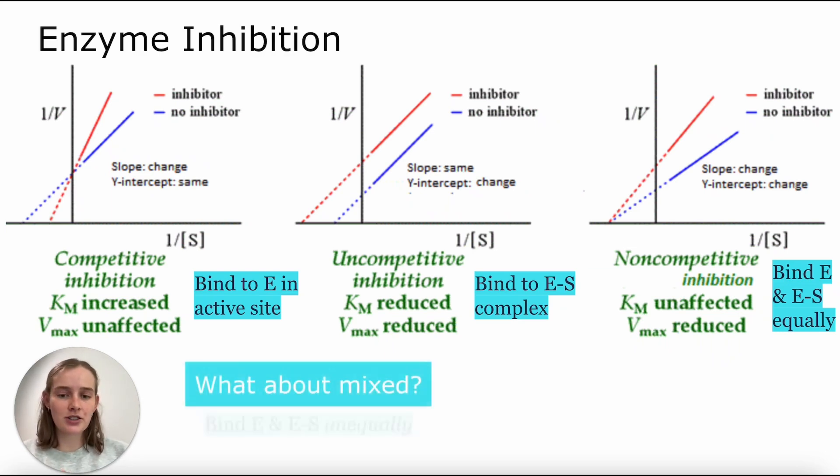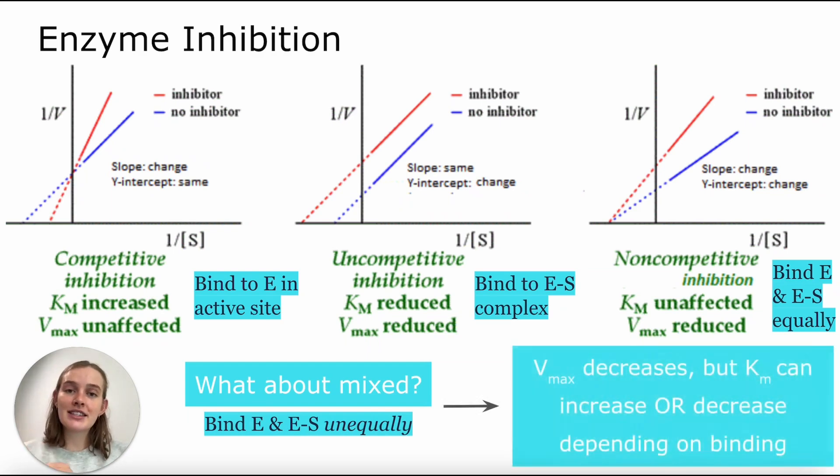Last but not least, because you may be asking yourself, what about mixed inhibition? This is when we have the inhibitor binding to the E, the enzyme complex, or the ES complex in an unequal fashion. So we cannot predict how everything is going to shake out. We do know that Vmax will decrease. However, we cannot tell if Km will increase or decrease because it depends on the binding. If the inhibitor binds to the enzyme, we are going to have an increase in Km. But if it binds to the ES complex, we will likely see a reduction or a decrease in Km.